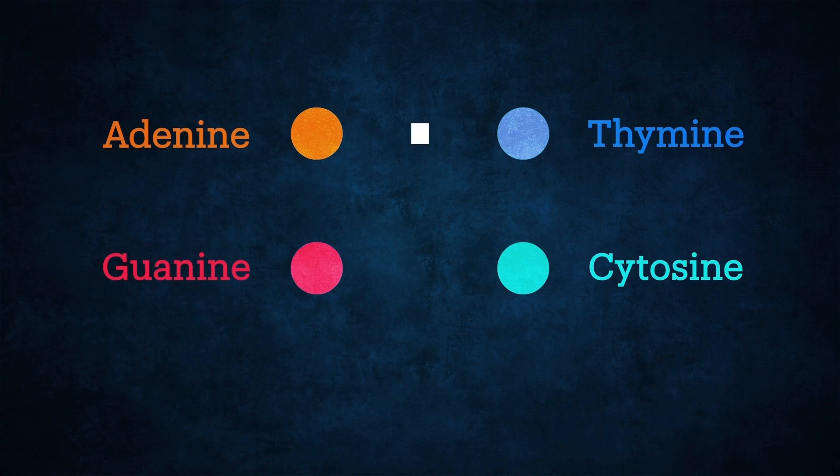These bases pair up with one another to form the double helix, but only with their complementary base. So adenine always pairs with thymine, while guanine always pairs with cytosine.